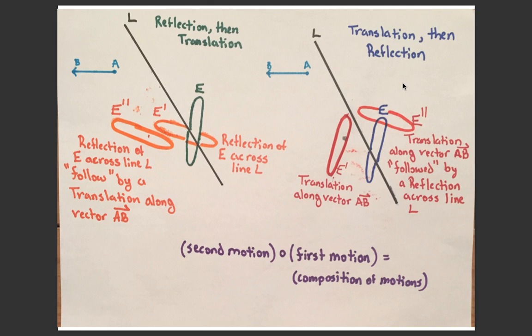On the right side of the screen, I reverse the order and we're going to translate then reflect. We have our line L and our original ellipse E, and we're going to translate it along vector AB to give us this first image E prime. Then we're going to reflect that across line L to give us our final image E double prime. Once we do that, we can see that the final images for each side are in different locations with respect to the original image.